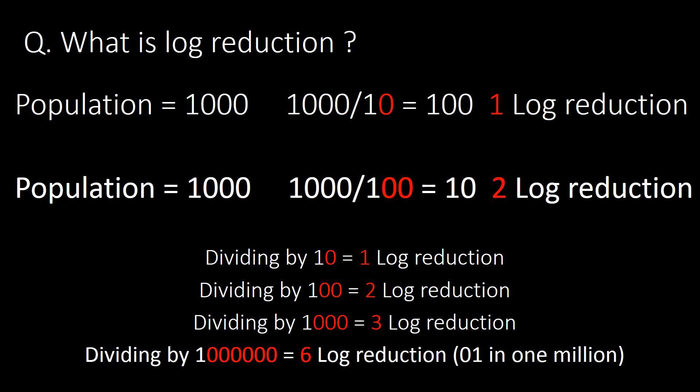What is log reduction? Consider a population of 1000 present on a particular surface. If we divide it by a factor of 10, the remaining population will be 100, and here we achieve 1 log reduction. For the same amount of population, if you reduce it by a factor of 100 — that is, divide it by 100 — we will get a remaining population of 10, and that will be a 2 log reduction.